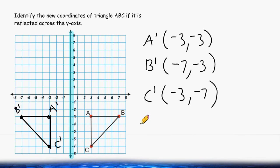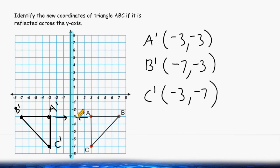One thing we should observe after doing our reflection is this: whenever you are reflecting anything across the y-axis, notice that the y-values do not change at all. For example, the original point A had a y-value of negative three, as does the reflected point A. So when reflecting anything across the y-axis, the y-values will not change.